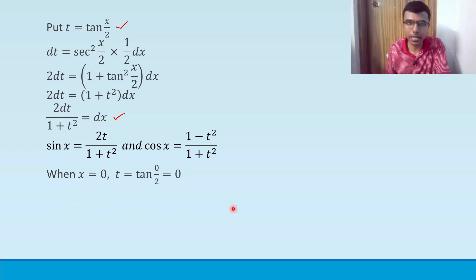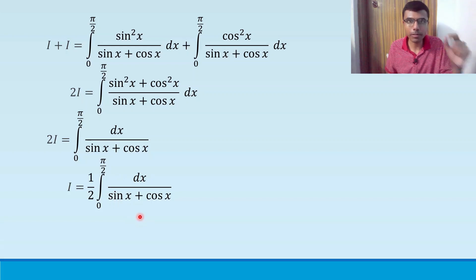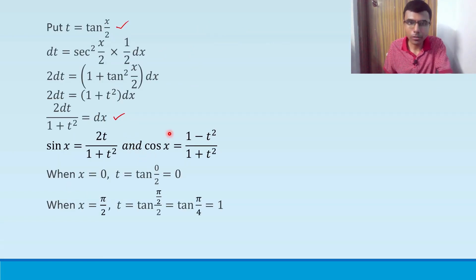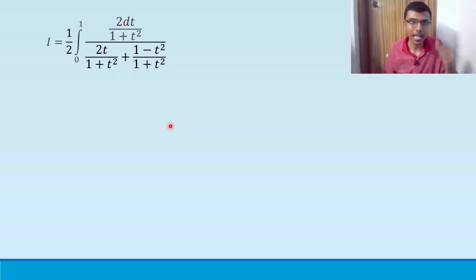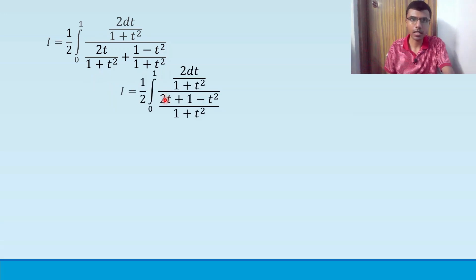Let us now change our integral. The limits become 0 to 1, dx = 2 dt/(1 + t²), sinx = 2t/(1 + t²), and cosx = (1 - t²)/(1 + t²). Since the two denominators in the denominator expression are the same, I can add up the numerators: 2I becomes (1/2) integral from 0 to 1 of 2 dt / [(1 + t²)(2t + 1 - t²)].